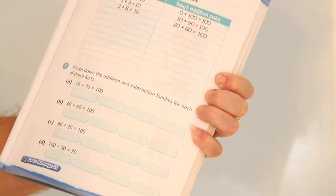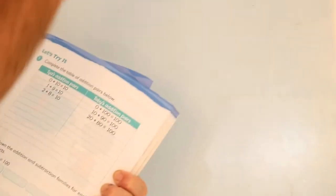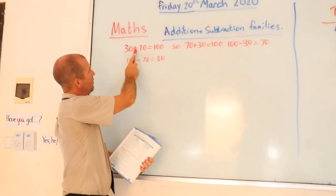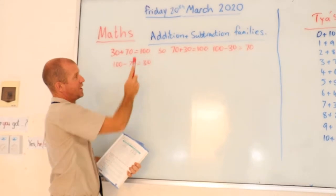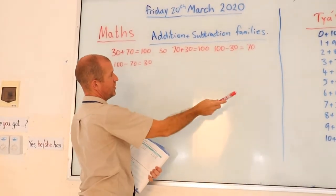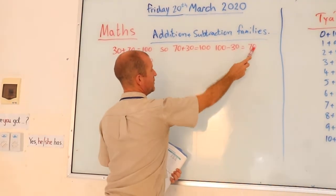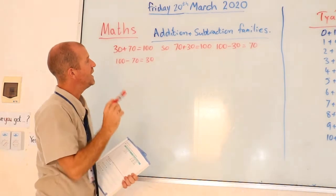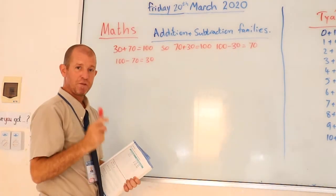Now remember what I said earlier, we have the addition and subtraction families. I told you that if you know that 30 plus 70 is 100, then you know 70 plus 30 is 100. 100 minus 30 is 70, and 100 minus 70 is 30. These are addition and subtraction families.